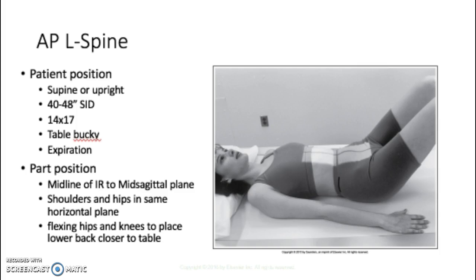For the AP L-spine, patient position is supine. It's unusual to do it upright but you can if needed. Standard SID is 40 inches; Merrill's says 48 inches, which helps reduce distortion and open the intervertebral disc spaces better — but be aware the national exam may say 48 inches. Use a 14x17 image receptor. Breathing instruction is expiration, which is typical for most L-spine views.